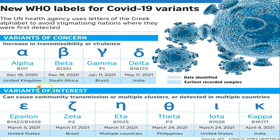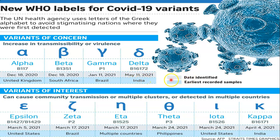The next variant of concern is Gamma (B.1.1.28), also called the Brazilian variant, reported in January 2021. On May 11, 2021, a new and more dangerous variant was detected — called the Delta variant, B.1.617.2 — which was first detected in India. These are the different variants of concern.